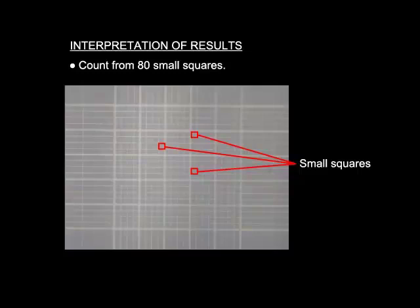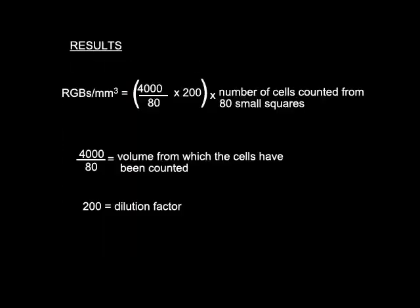Interpretation of results: red blood cells are counted from eighty small squares, and the red blood cell count per millimeter cube of blood is estimated as shown.